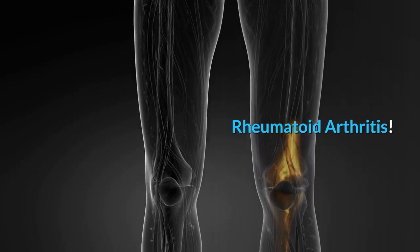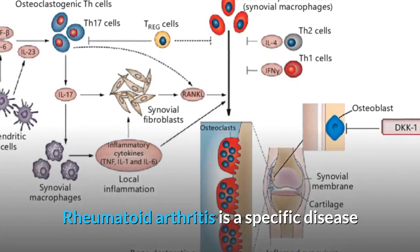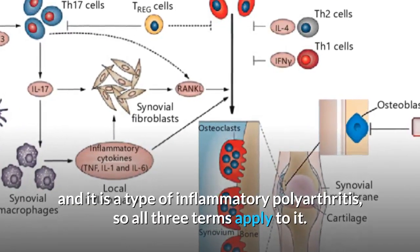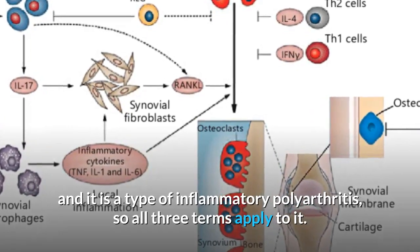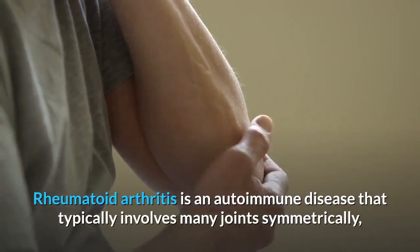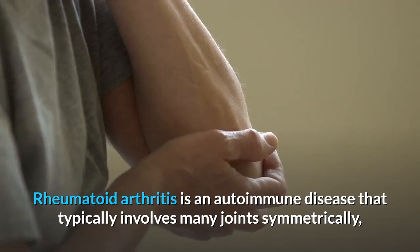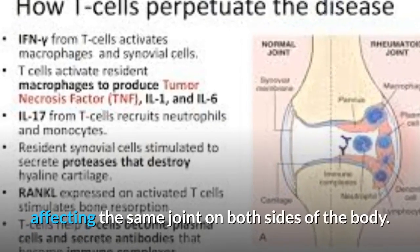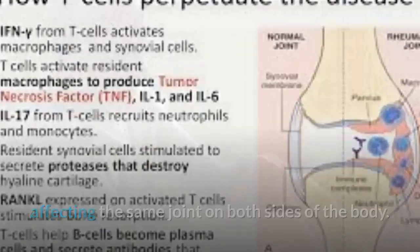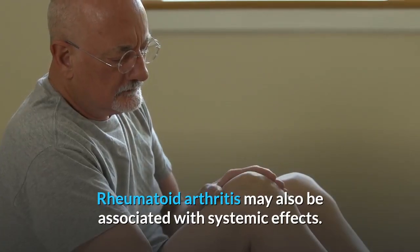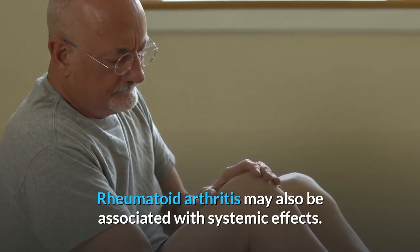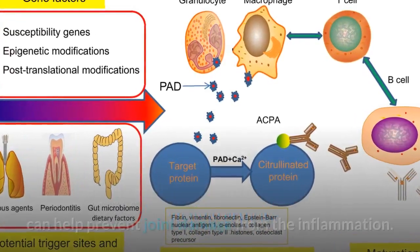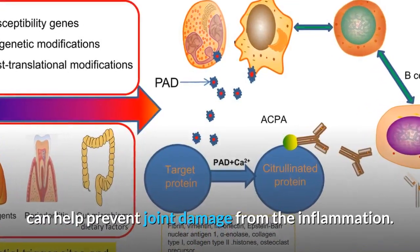Rheumatoid arthritis is a specific disease and it is a type of inflammatory polyarthritis, so all three terms apply to it. Rheumatoid arthritis is an autoimmune disease that typically involves many joints symmetrically, affecting the same joint on both sides of the body. It may also be associated with systemic effects, and early and aggressive treatment can help prevent joint damage from the inflammation.